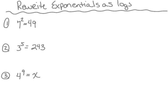In this video we'll be looking at how to rewrite an exponential equation in the form of a log. If you take a look at number one, we've got the exponential 7 squared is equal to 49, and what we're going to do is rewrite this in the form of a log.